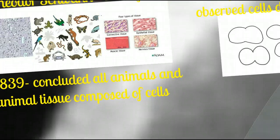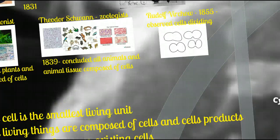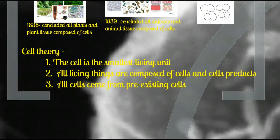In 1855, Rudolf Virchow confirmed observations of cells in different stages of cellular division, and controversially published that cells must arise from pre-existing cells. It was controversial because he claimed work that was not his own. This body of work leads us to our modern cell theory with its three tenets: the cell is the smallest living unit, all living things are composed of cells and cell products, and all cells come from pre-existing cells.